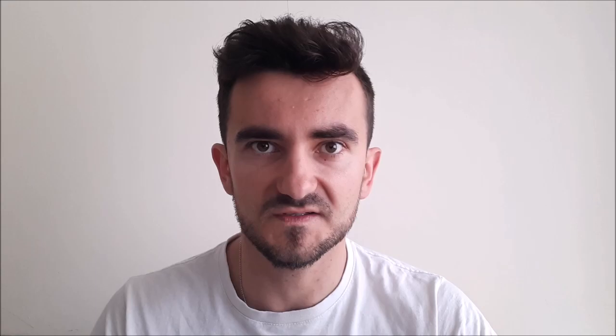Now, exercise 5. Teraz zrobicie zadanie piąte. W zadaniu piątym kolejny raz sobie przesłuchamy nagrania. I będzie to nagranie dotyczące wakacji, które spędziły dwie osoby. I musicie po prostu napisać, czy zdania o tych osobach są prawdziwe, czy fałszywe. So now, let's listen and decide if the sentences are true or false. CD 3, track 21.